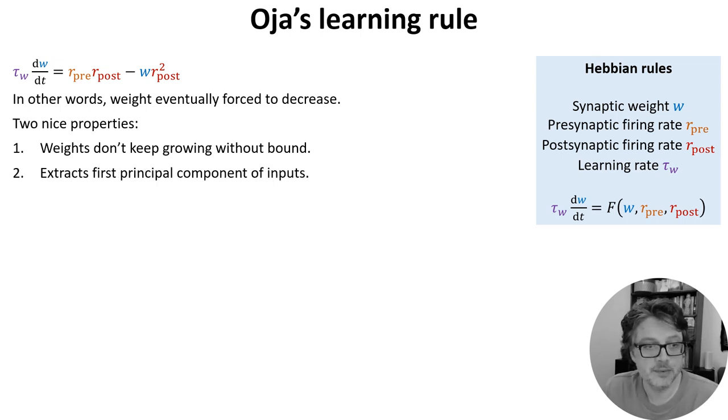The second is more surprising. This learning rule extracts the first principal component of its inputs. A link between a biological learning rule and a statistical or machine learning algorithm, principal component analysis. In the next slide, I'm going to show you how to prove this, and it gets a bit hairy. So to keep things a bit simpler, we'll make a couple of not quite right assumptions.